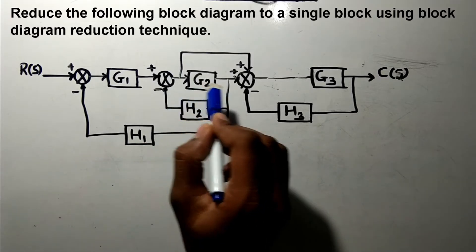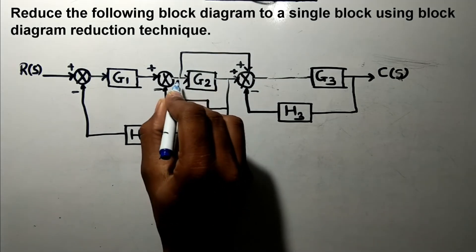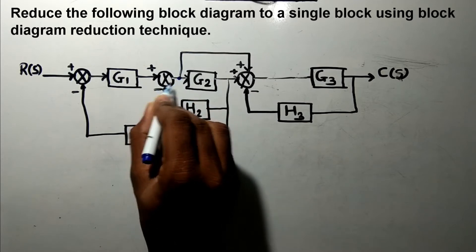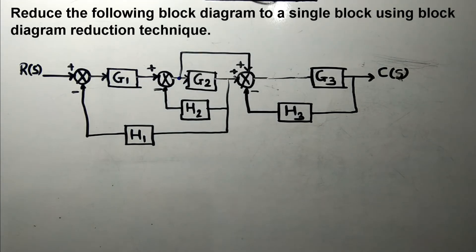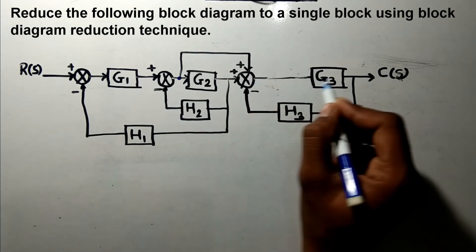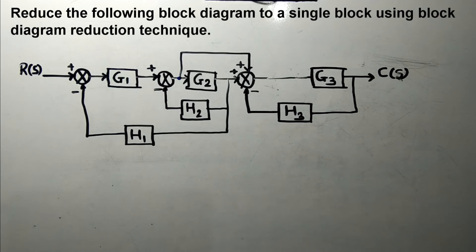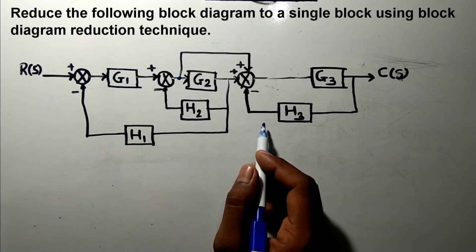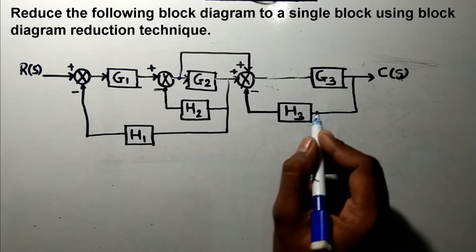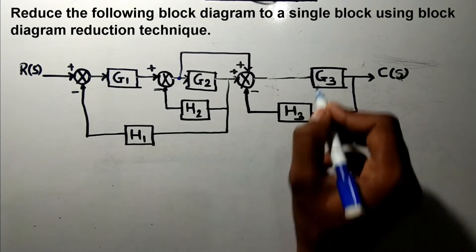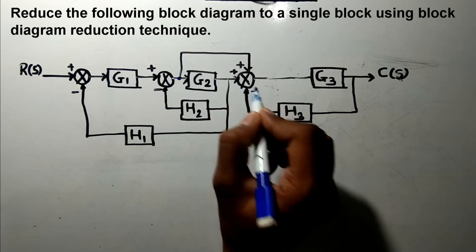Looking at this diagram, it appears to have a feedback loop, but note that this branch is connected here — this takeoff point is in between the summing point and this block — therefore it is not a feedback loop and we can't solve it directly. However, you can observe that G3 and H3 are actually a separate feedback loop, so we can apply our rule to solve that.